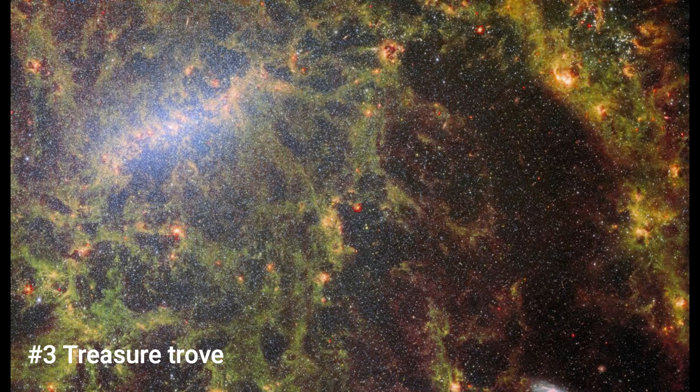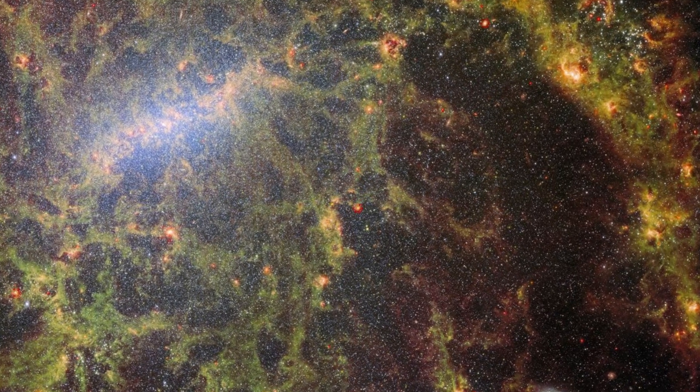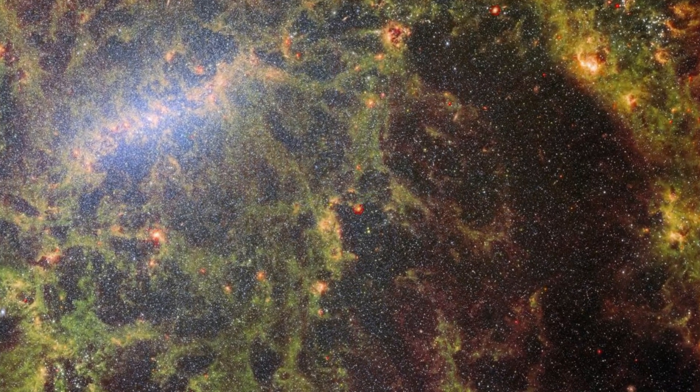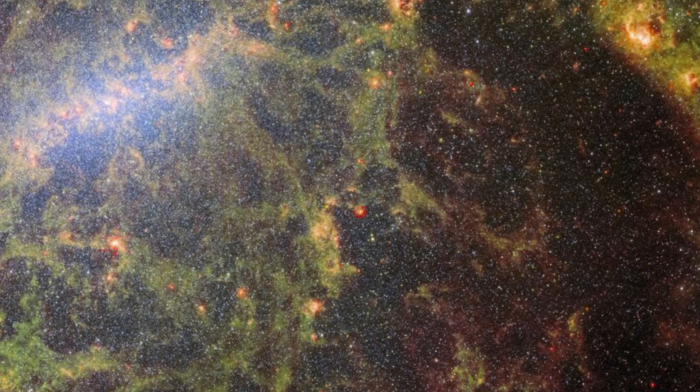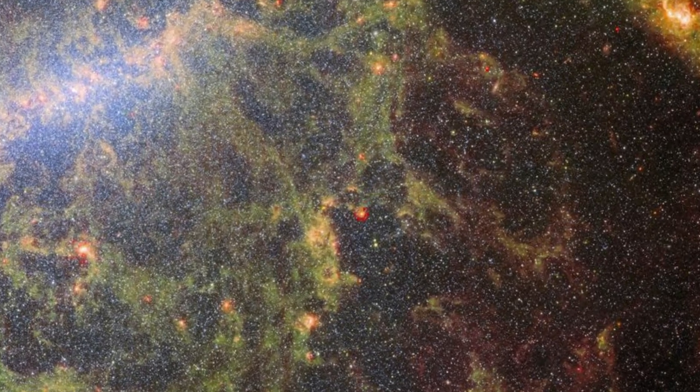Number 3. Treasure Trove. Astronomers are using the James Webb Space Telescope to investigate star birth in the deeper reaches of space, and it has recently taken a magnificent picture of a faraway barred spiral galaxy.